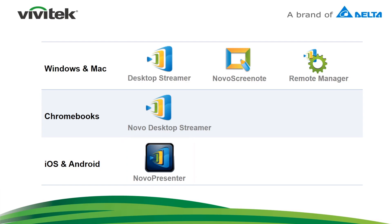Novo ScreenNote is a free screen annotation software which can help make your collaboration more effective and engaging. It can be used regardless of whether or not you are connected to Novo Pro, and works in conjunction with any software running at the time, allowing markups and screen captures which can be shared. It also provides annotation on document camera images.